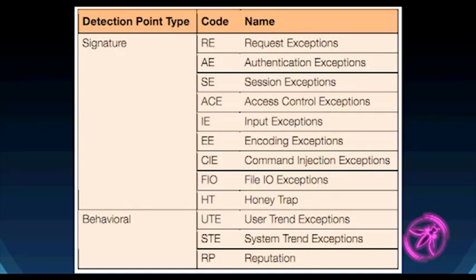This is one way to look at detection points and break them down. On the left-hand side you can see parent categories that are more traditional signature-based — request exceptions, authentication, session, and others. There are some newer ones at the bottom like honey trap, and then a more behavioral category. We all know about cross-site scripting and SQL injection, but there are also external data feeds you can correlate. AppSensor is a good blend between traditional IDS/IPS, WAF, and web fraud detection — putting those together and instrumenting your code to do all that.